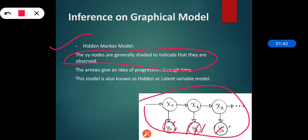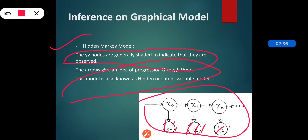The directions or arrows tell us how information is carried out and how the progression is going on. The main necessary condition is that the graph must be a directed acyclic graph. This model is also known as a hidden or latent variable model, because the random variables are not observed and one is interested in performing inference about them using observations of dependent random variables.